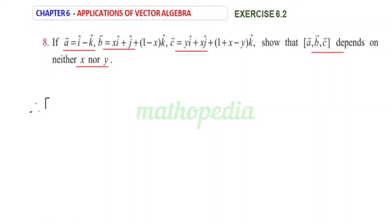Therefore, box product of A vector, B vector, C vector is equal to determinant. Coefficient of i, 1. We don't have j vector, so 0. Then coefficient of k is minus 1.